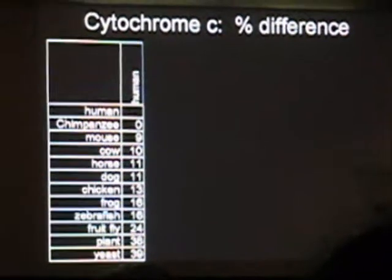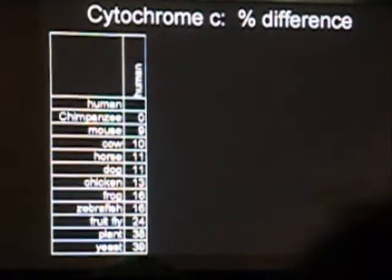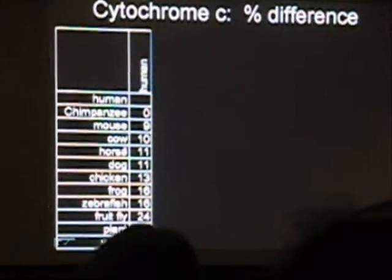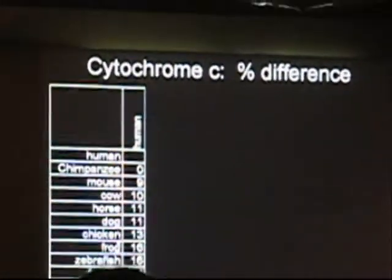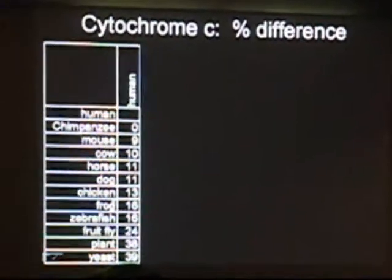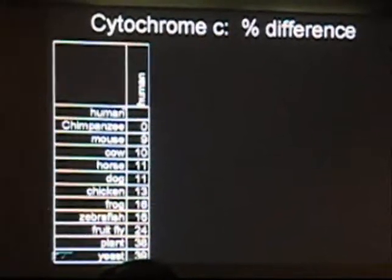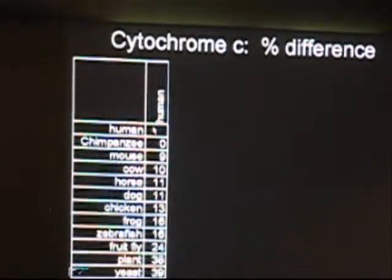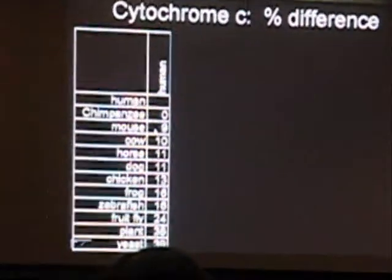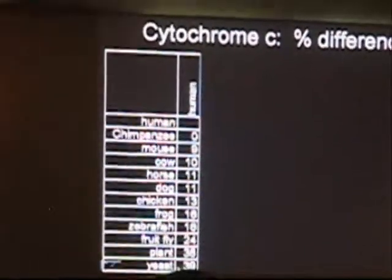Here's human cytochrome C compared to a whole bunch of different organisms. I condensed it to relevant ones due to slide size limits. You can see that chimp cytochrome C and human cytochrome C are about 9% different, and mouse is similar. Cow has a greater difference. Down at the bottom, yeast is 39% different from humans. You can actually do this experiment yourself — all these sequences are freely available online, with tools and algorithms to compare them.